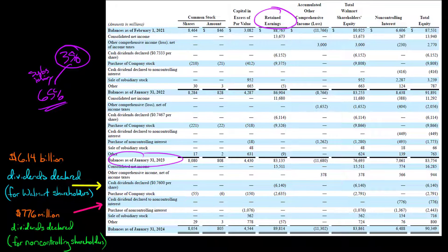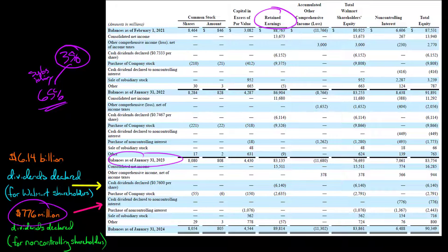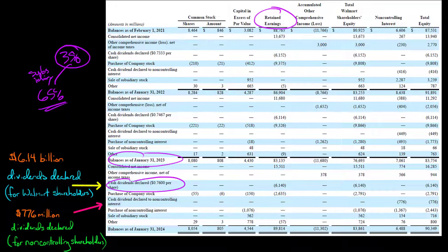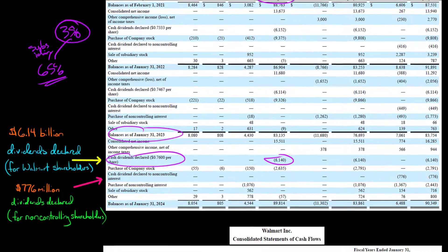So if that subsidiary pays dividends, the non-controlling shareholders receive some of those dividends — that's what this line represents. Notice it does not affect retained earnings for Walmart; it actually affects the non-controlling interest column. It's approximately 776 million of dividends declared going to non-controlling shareholders of an entity that Walmart has a controlling interest in — not to Walmart's own shareholders.